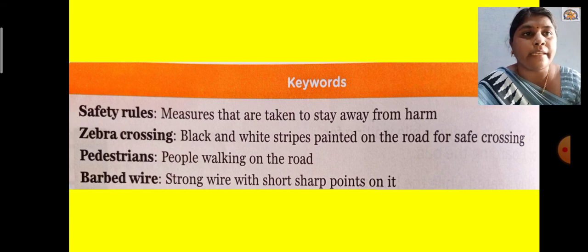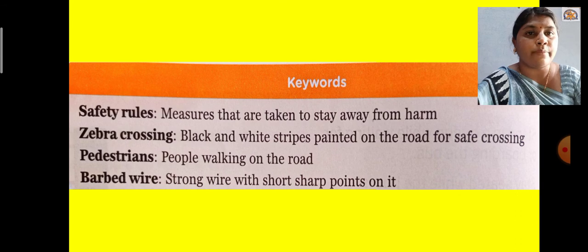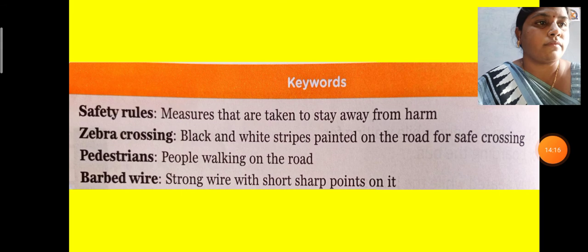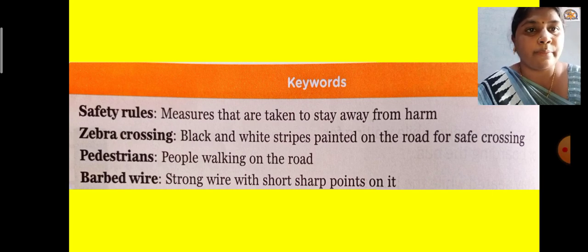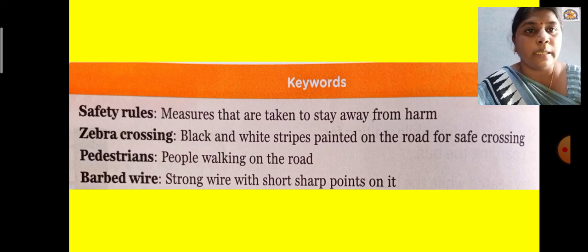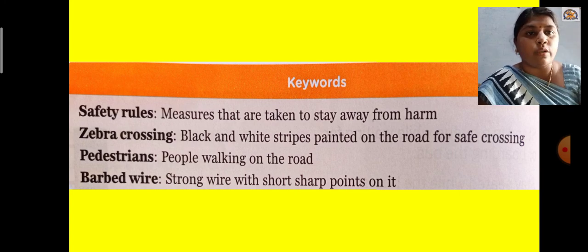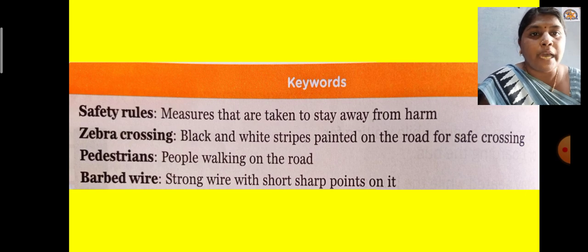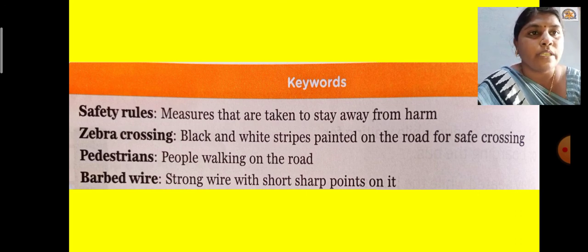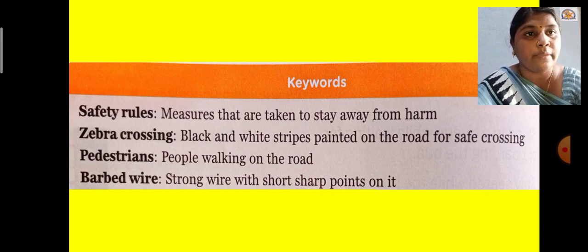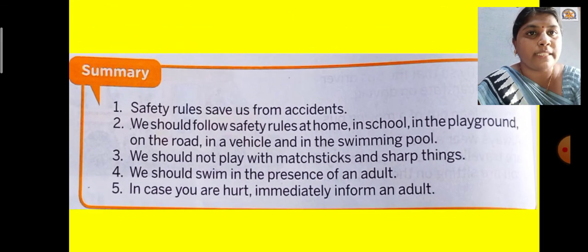Keywords: Safety rules means measures taken to stay away from harm. Zebra crossing means black and white stripes painted on the road for safe crossing. Pedestrians means people walking on the road. Barbed wire means strong wire with short sharp points on it. Write all keywords and their meanings in your science notebook and learn the definitions.